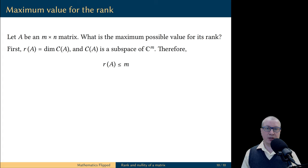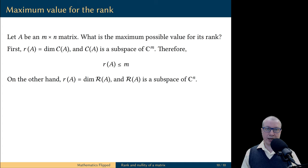This means the rank of A does not exceed m, the number of rows in the matrix. But on the other hand, the last proof revealed that the row space of the matrix A has the same dimension as the column space; therefore, the rank of the matrix is also equal to the dimension of the row space of A.